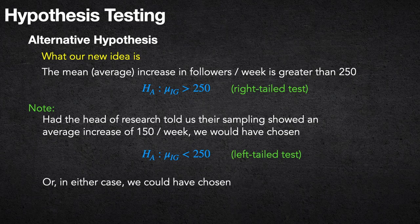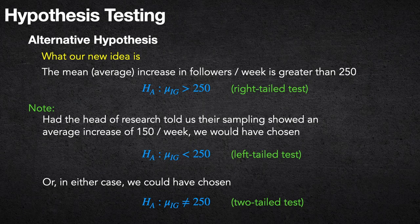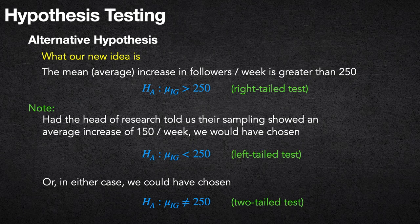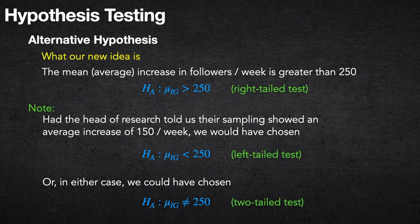There's also a third option: the two-tailed test, where H_a: μ ≠ 250 — it could be a little less or a little more. For your worries — your midterm — use the wording of the question to decide. If the question says 'test whether the true mean is greater than 250,' do a right-tailed test. If it says 'test whether the true mean is not 250,' do a two-tailed test.